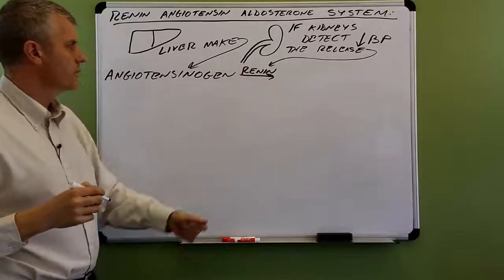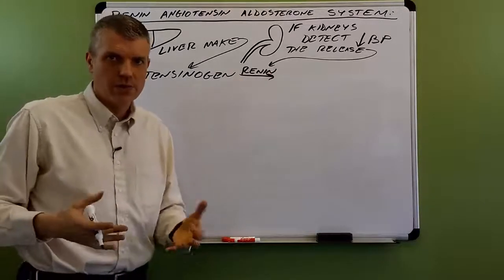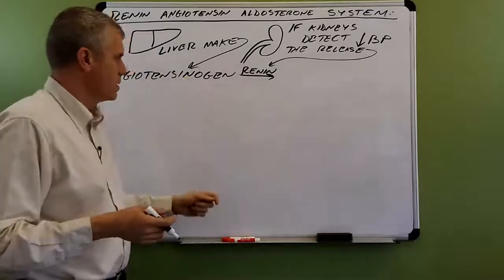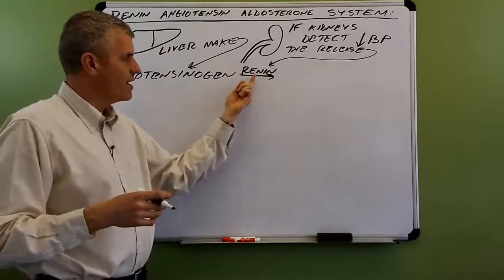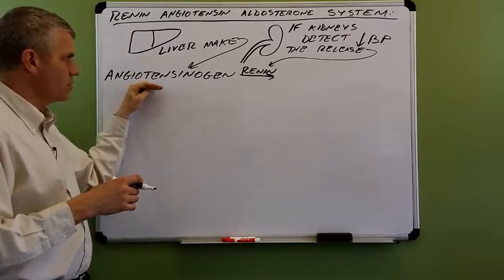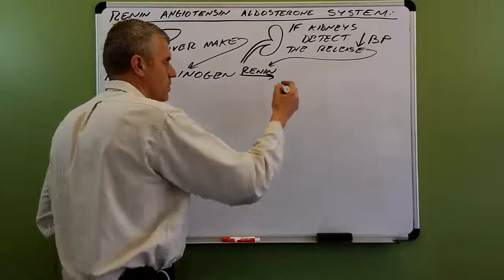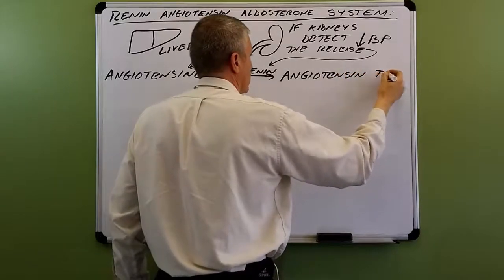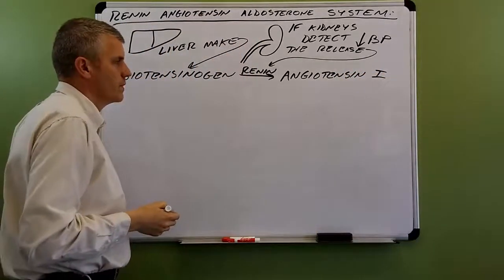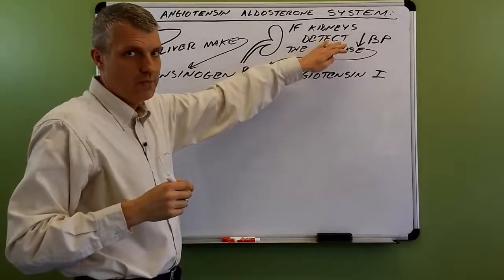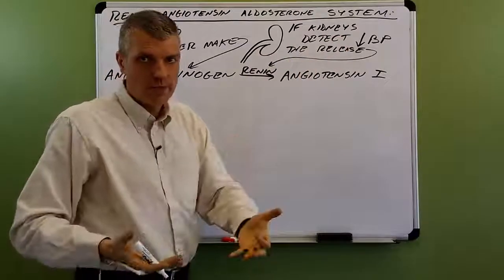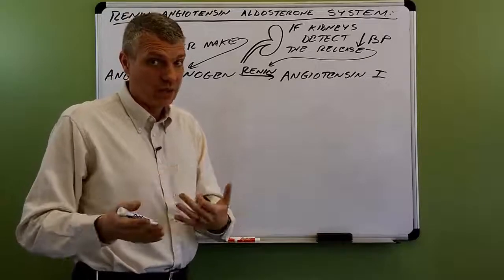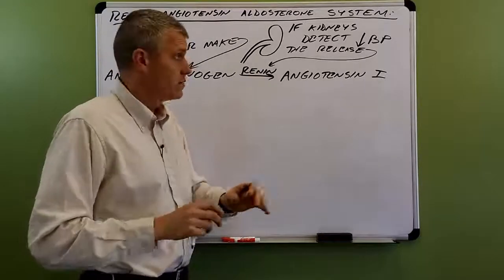The enzyme renin catalyzes the reaction of angiotensinogen, turning it into angiotensin-1. Getting back to the kidney — if the kidneys detect low blood pressure, keep in mind your kidneys make urine in order to get rid of extra water, extra salts, and nitrogenous waste, thereby cleaning the blood.